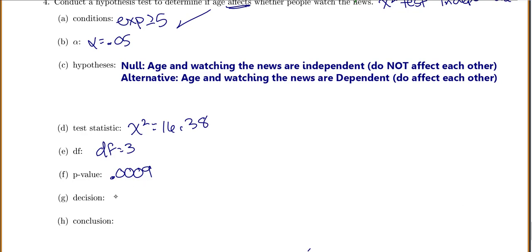So now for your decision, you say, well, my p-value of 0.0009 is smaller than alpha equals 0.05. So that's a small p-value, so we will reject our null. And that means we have evidence for the alternative.